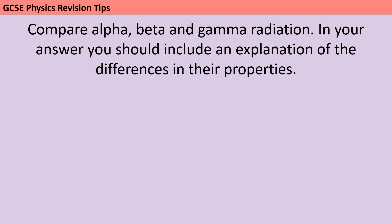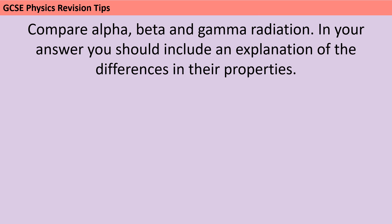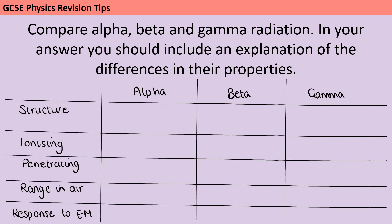The key ones are going to be the differences in ionising power and penetrating power, but you might also want to include the range in air and also their response to an electromagnetic field. The question says you need to include an explanation of these, so you're also going to need to describe the structure of each type of radiation. This question is another perfect example of where it's a good idea to lay your answer out as a table, making sure that you're talking about all three types of radiation and remembering to make equivalent statements about their structure and properties.